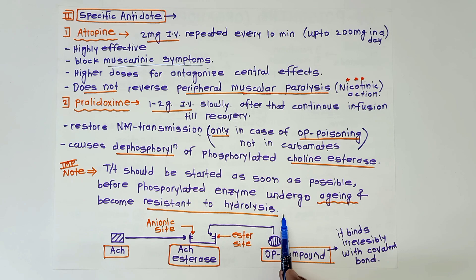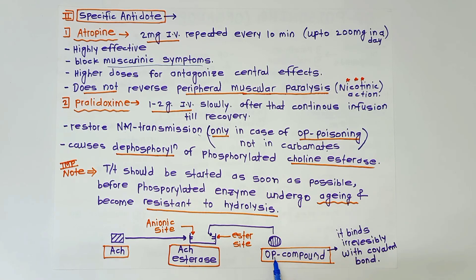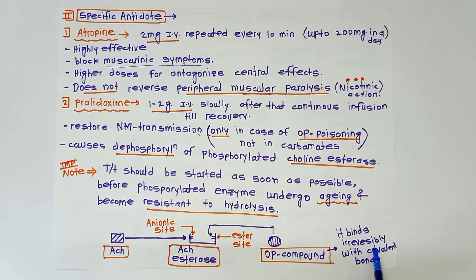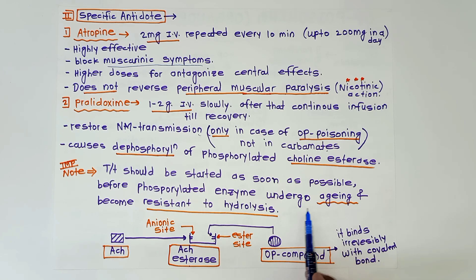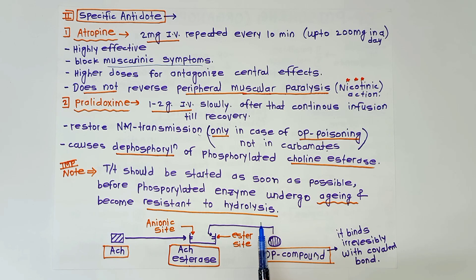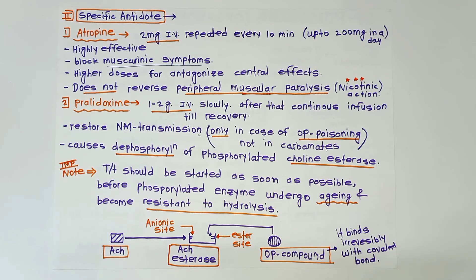An important note: treatment should be started as soon as possible, before the phosphorylated enzyme undergoes aging and becomes resistant to hydrolysis. When organophosphate compounds bind to the acetylcholinesterase enzyme at the steric site, they form a covalent bond which is irreversible in nature. After some time, the enzyme becomes resistant to hydrolysis and undergoes the phenomenon of aging. Therefore, treatment must begin as soon as possible before aging occurs.